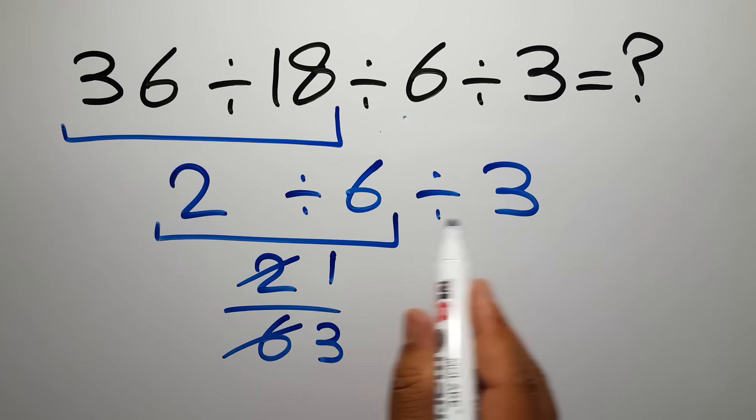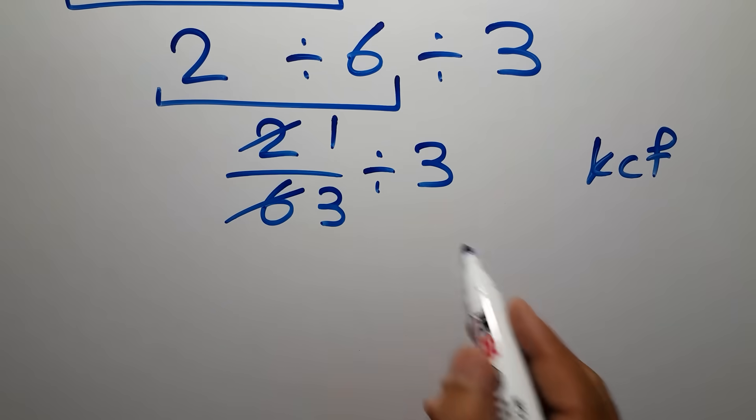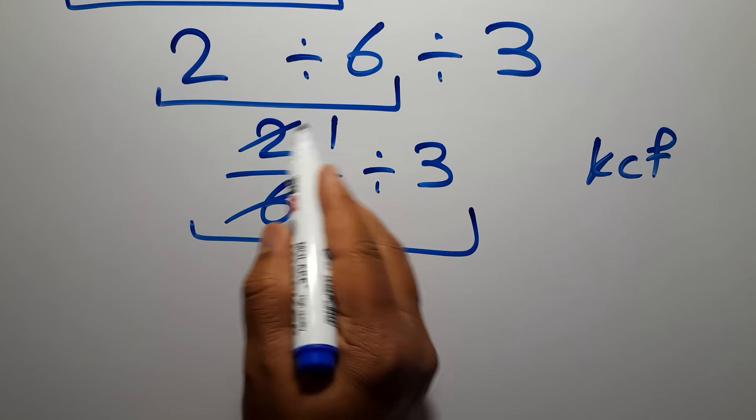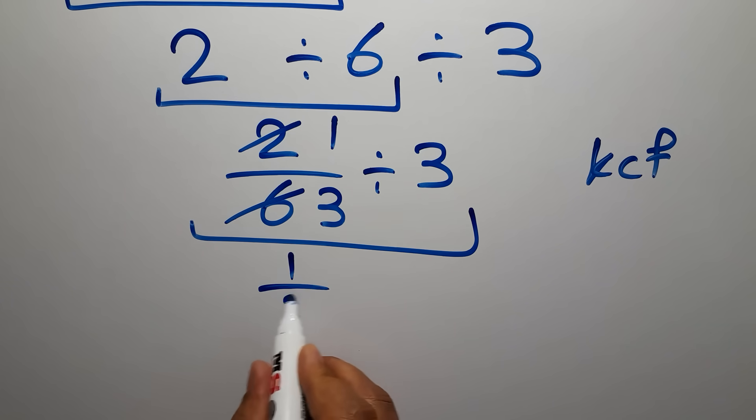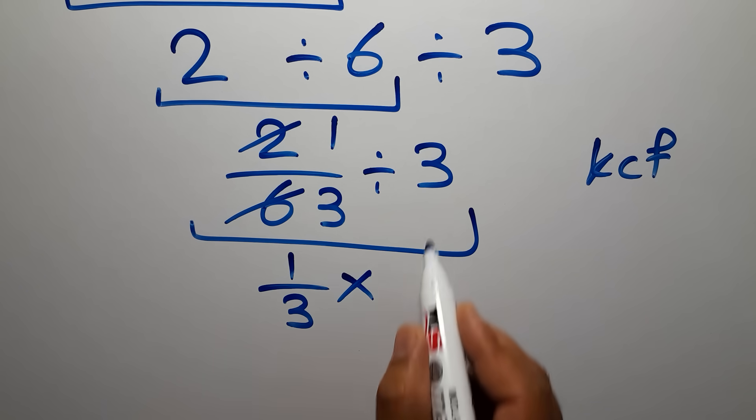Then divided by 3. According to the KCF rule, K stands for keep, C stands for change, and F stands for flip. We can write: keep the first fraction 1 over 3, change division to multiplication, and flip the second fraction.